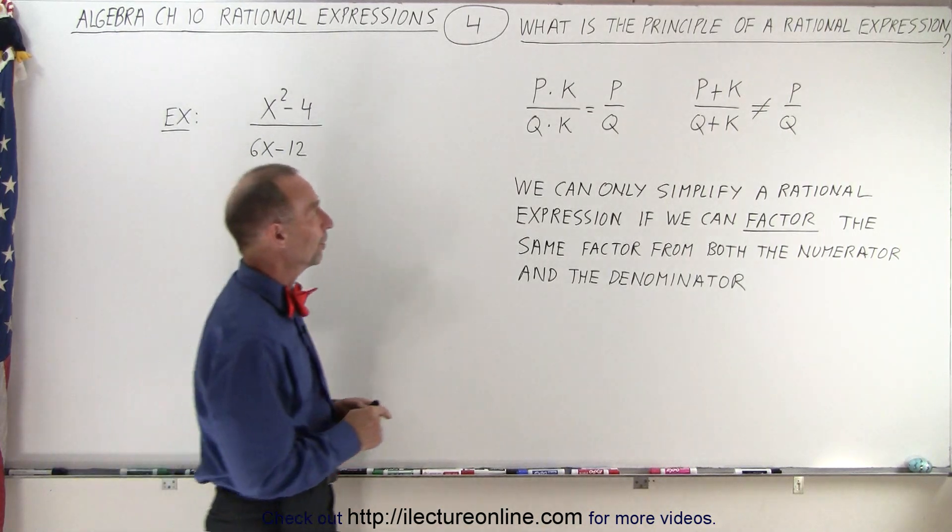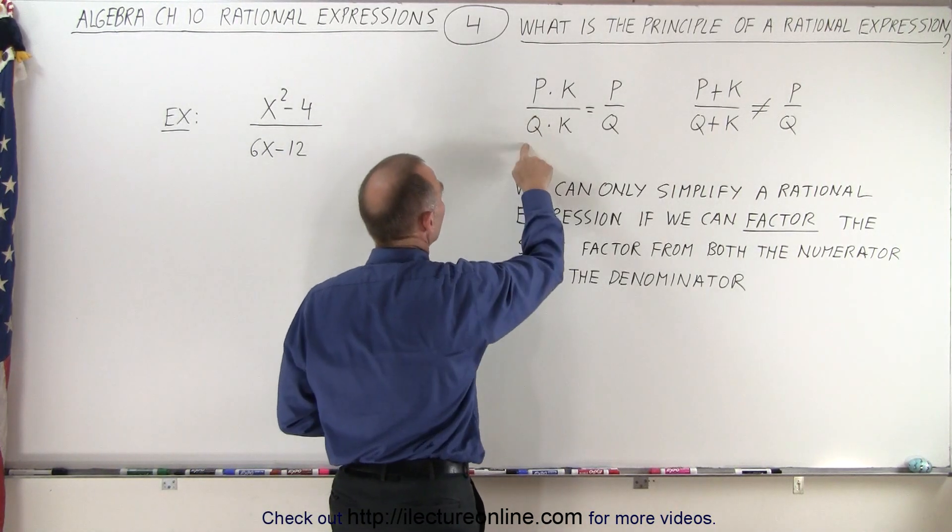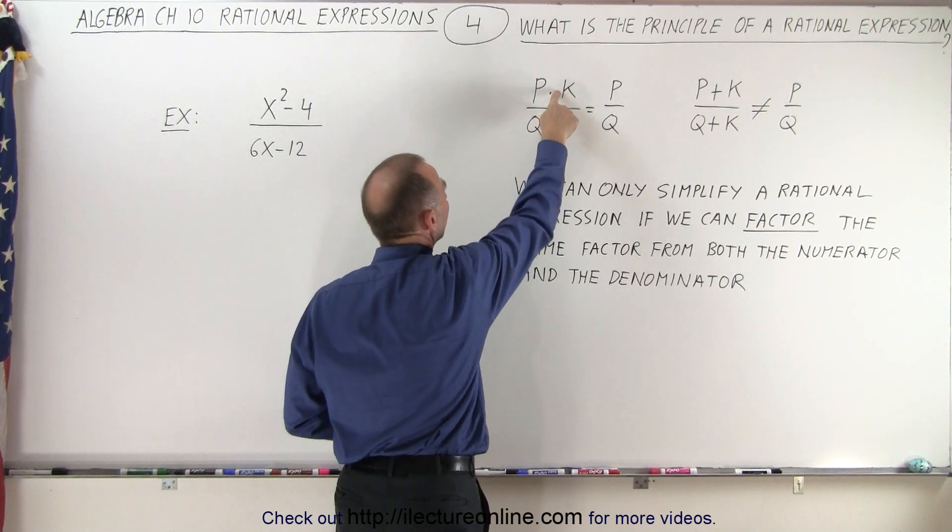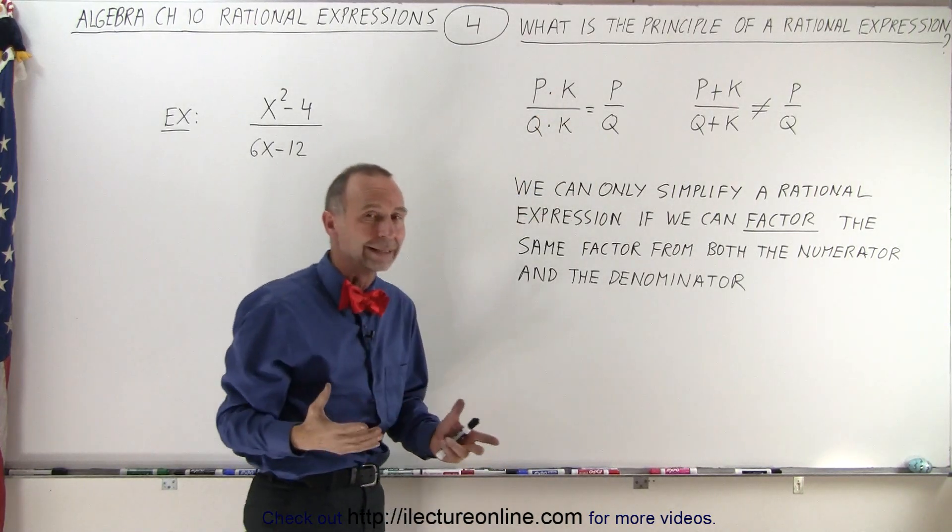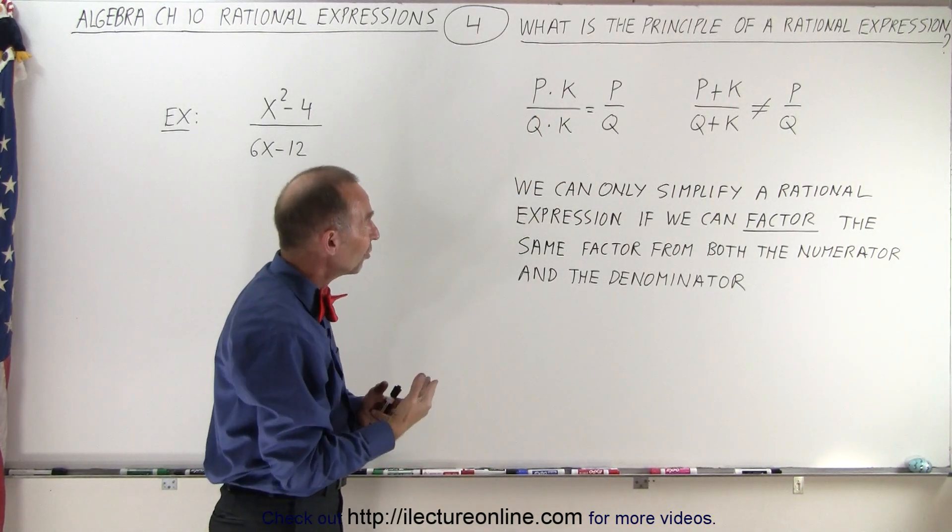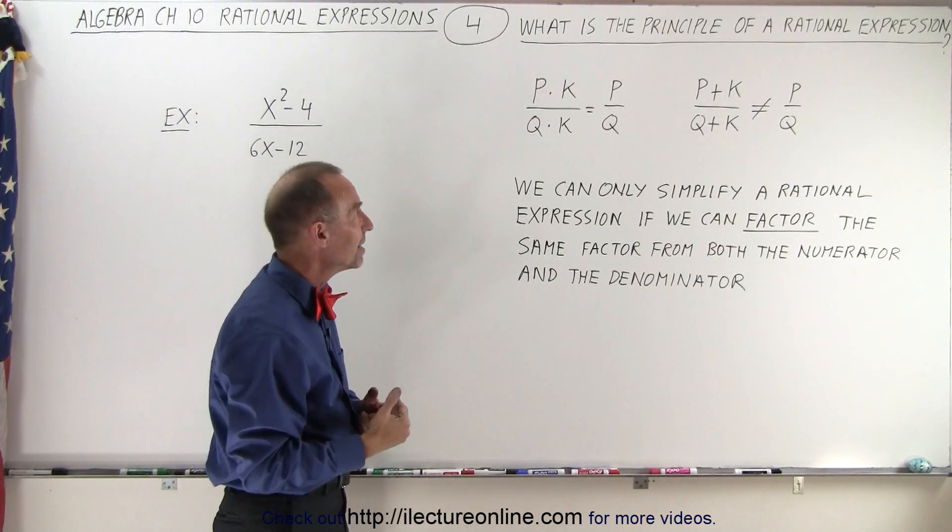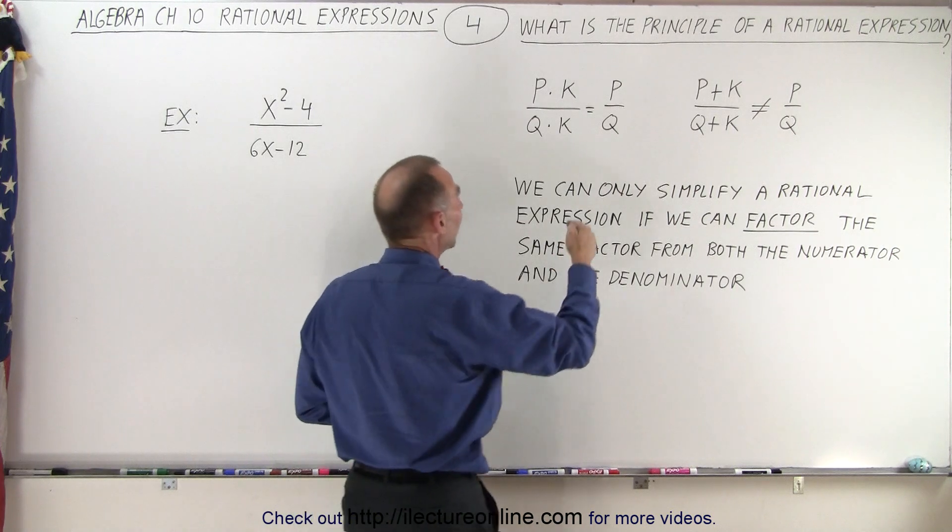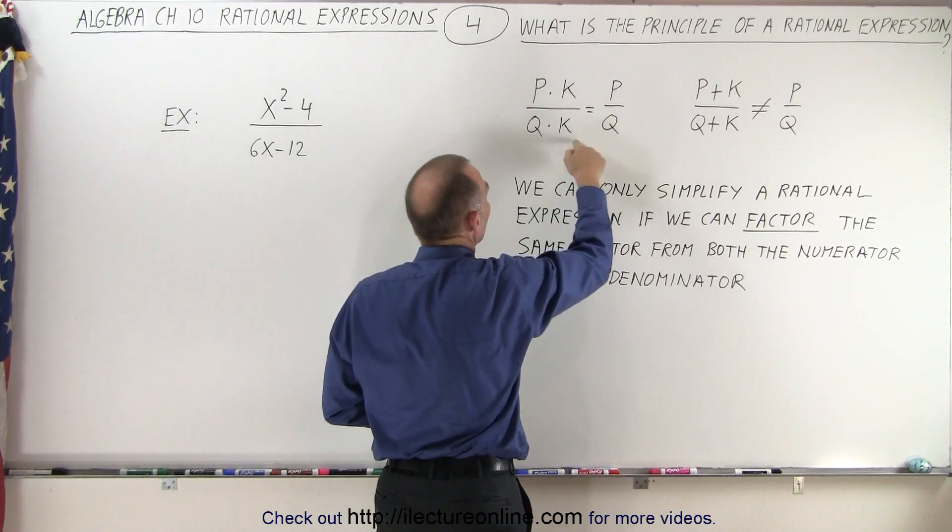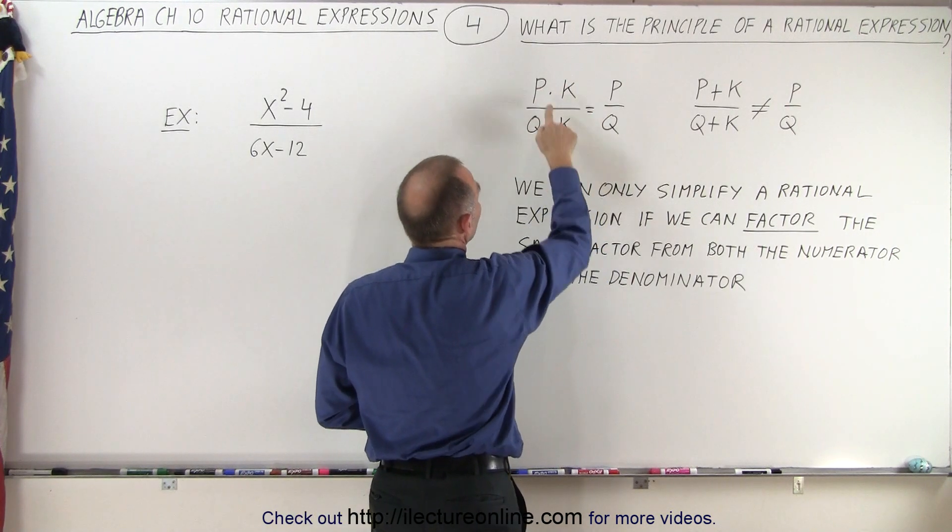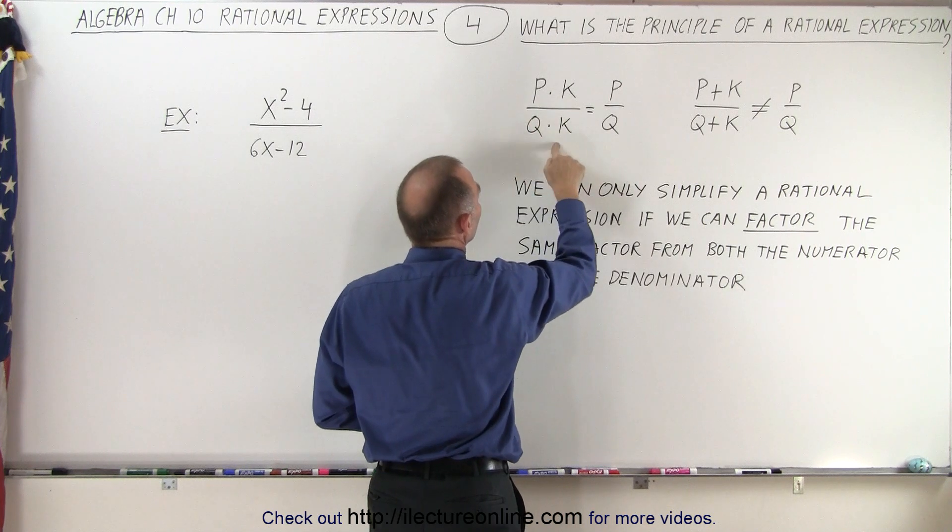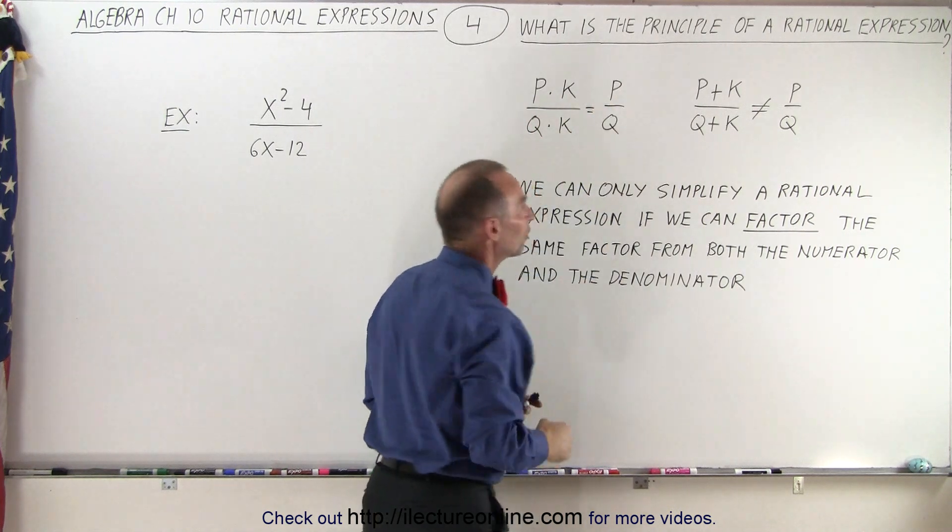Notice what we have up here. We have P divided by Q, but both the numerator and denominator are multiplied times K. So essentially both have the same factor K, and therefore we can divide both by K. We can write that P times K divided by Q times K is simply equal to P divided by Q.